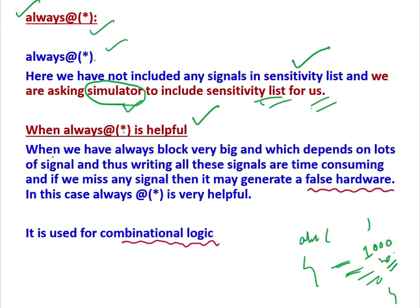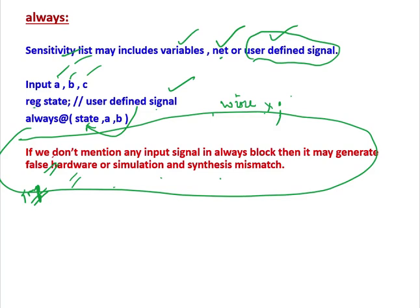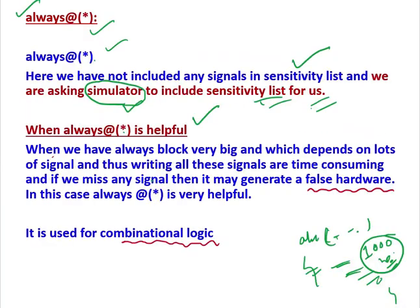If the execution of the always block depends on, say, 1000 signals, then we would have to include all 1000 signals one by one. And if we miss any signal, it may generate false or wrong hardware. Including 1000 signals inside the parenthesis is itself time consuming, and missing any one would cause problems. So instead of writing all these dependent signals one by one, it is better to write always @(*). This is very very helpful in that scenario, and it is usually used for combinational logic design.